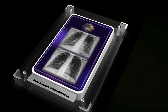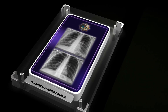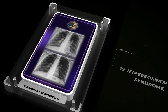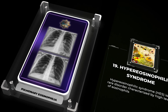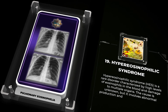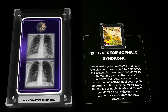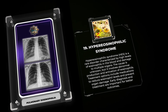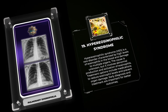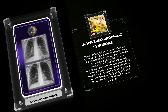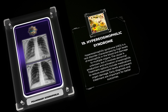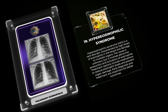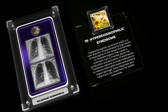Hypereosinophilic syndrome (HES) is a rare disorder characterized by high levels of eosinophils in the blood and damage to multiple organs. The cause is unknown, but it involves abnormal production and activation of eosinophils. Treatment options include medications to reduce eosinophil levels and prevent organ damage.